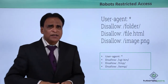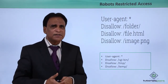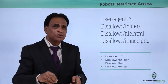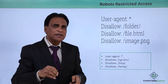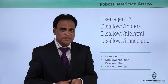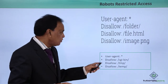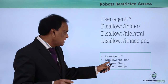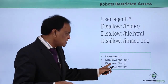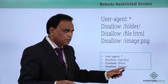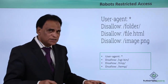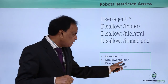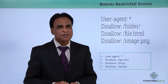Robots restricted access: you may have a complete website on the server but also some files and folders that you do not want Google or any other search engine to crawl and index. In that scenario, you can use 'user-agent asterisk' for all search engines, but then specify: disallow this folder, disallow this folder, disallow this folder. Search engines will crawl and index the rest of the site but will not crawl or index those specified folders.